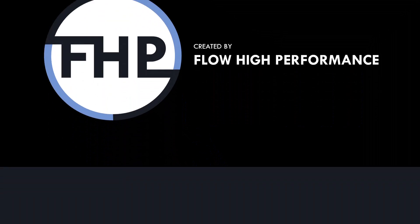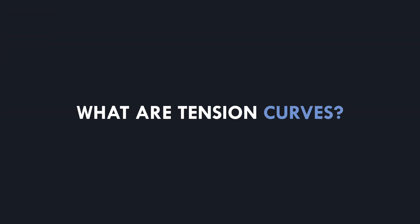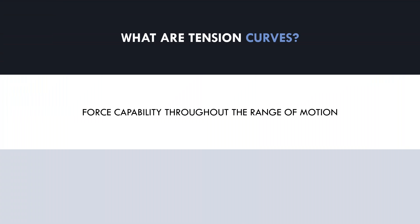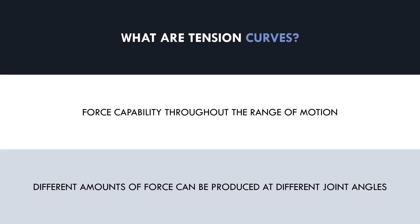So what exactly is a tension curve? A tension curve, also referred to as a strength curve, is the amount of force that can be produced throughout the range of a particular lift. We can produce different amounts of force at different points in the lift. For example, a chin-up is naturally easiest at the bottom range and harder at the top of the lift, so clearly there is a different amount of force that can be produced at different ranges throughout the lift.